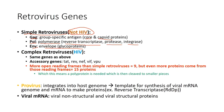HIV is a complex retrovirus, not a simple one. Complex retroviruses like HIV have the same GAG, POL, and ENV genes, but they also have accessory genes such as TAT, REV, NEF, VIF, and VPU. One important distinction is that complex retroviruses have more open reading frames than simple ones — specifically nine open reading frames.